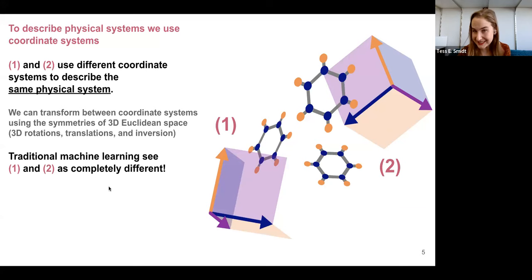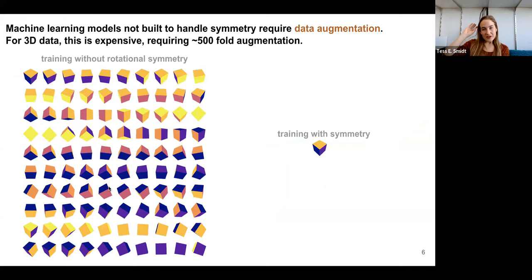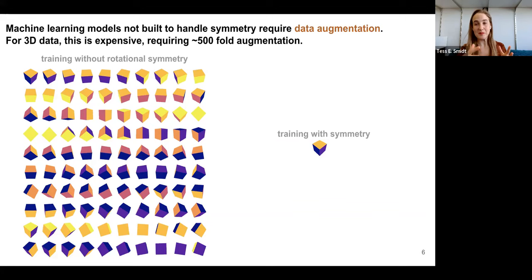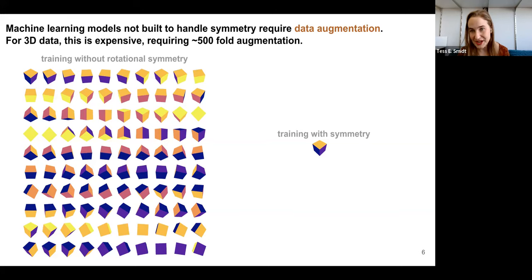When we want to do machine learning to predict properties or generate new assemblies of molecules, we run into a problem: traditional machine learning sees the description with coordinate system one and coordinate system two as completely different, completely unrelated. It has to learn to emulate that it understands they're the same physical system. This can be quite costly. If you have a model not built to handle symmetry, you typically have to train it using data augmentation, which gets quite expensive in 3D.